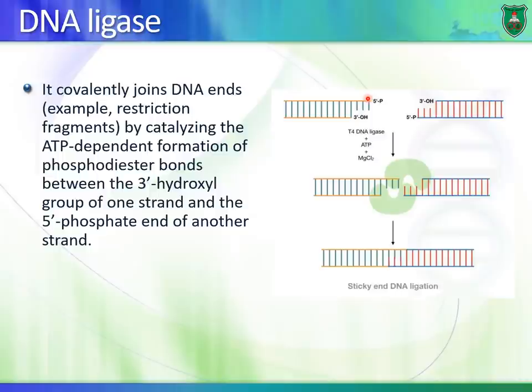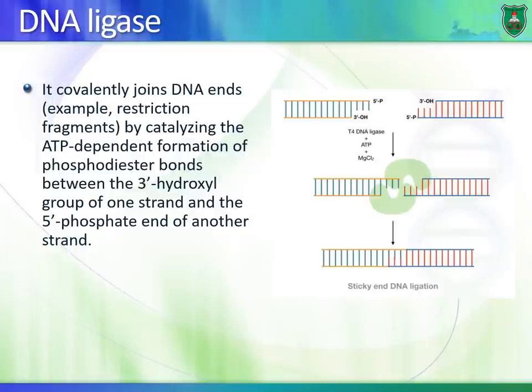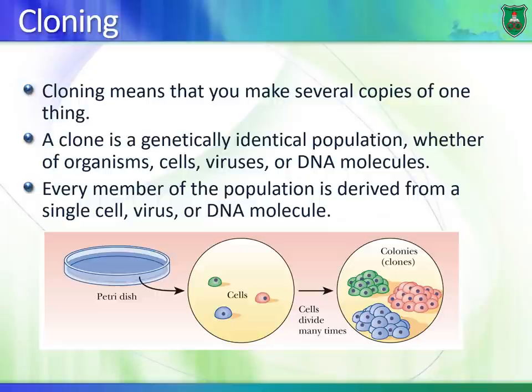The DNA ligase forms a phosphodiester bond between the five prime end of one fragment and the three prime end of the other. The cohesive ends first form hydrogen bonds, followed by phosphodiester bond formation, resulting in one continuous, stable DNA fragment. Remember that this enzyme requires ATP — it needs energy.